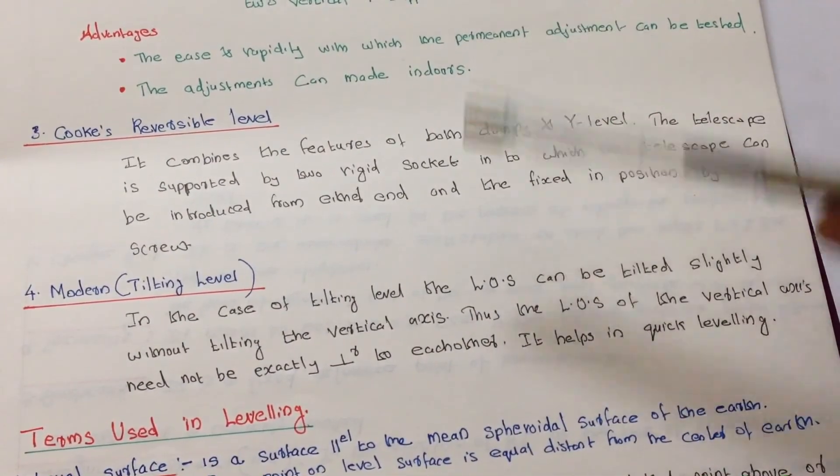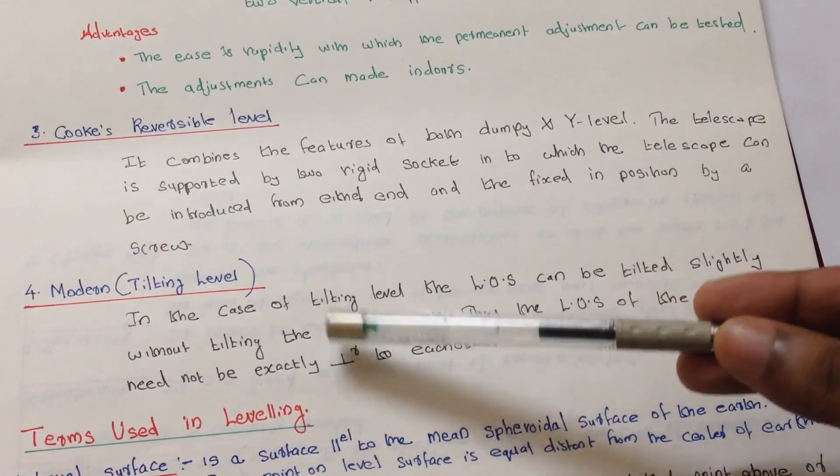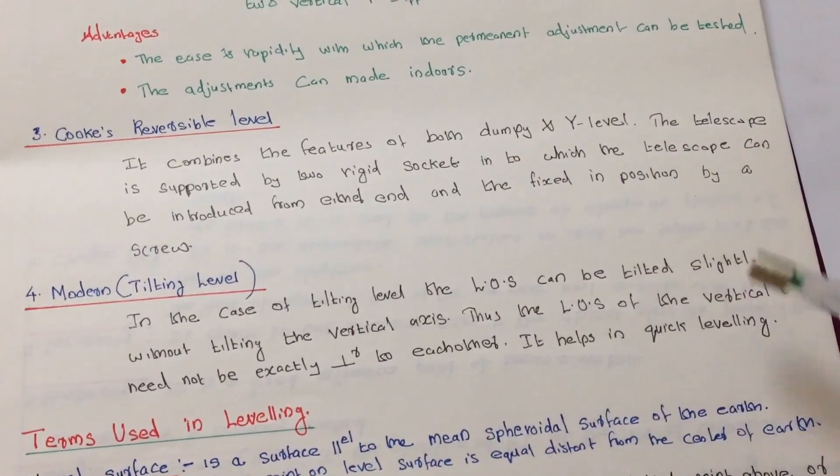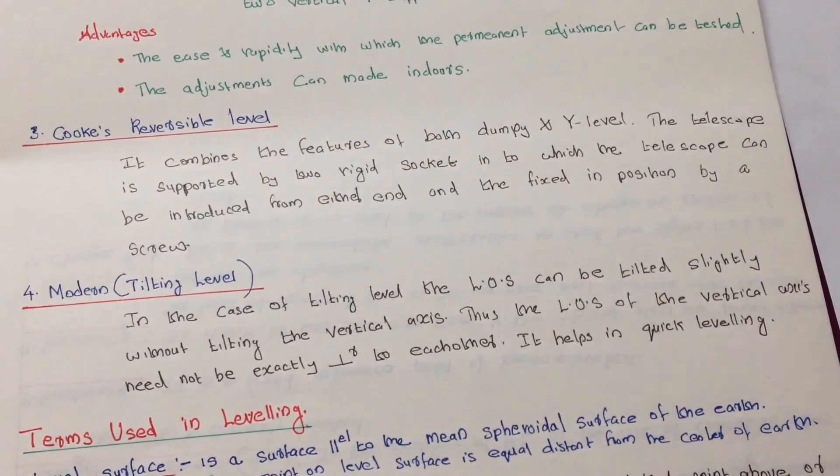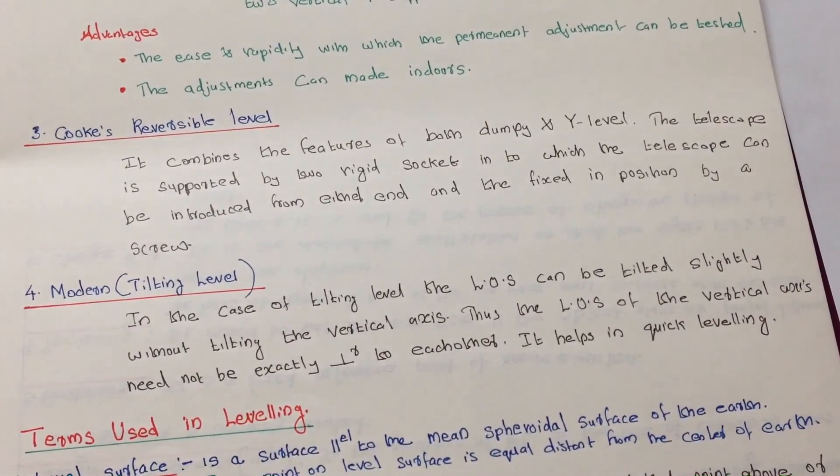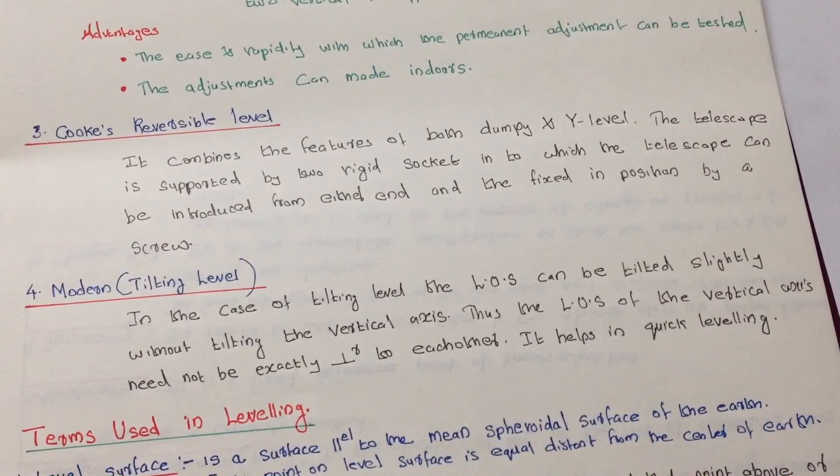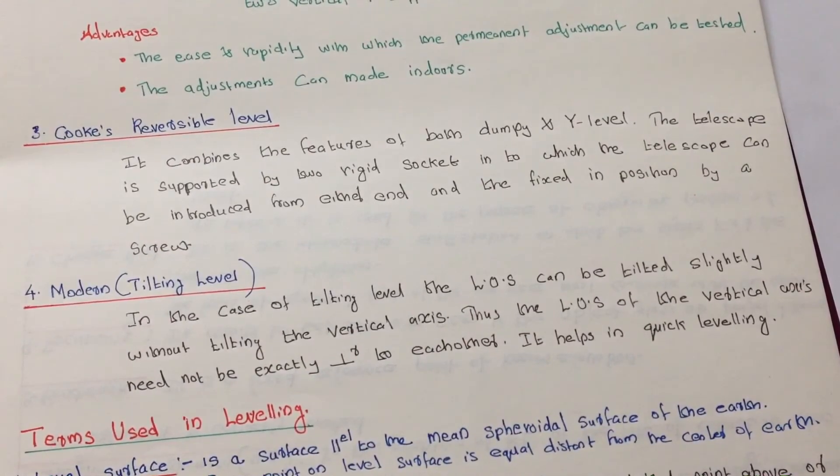Compared to the other three levels, what we can find in the modern or tilting level is that it helps quick leveling. It mainly saves some time. So there are six types of level and these are the four most important levels, types of levels. I hope you all understand the basics of the types of the level. If you like my channel or if you like my video please subscribe my channel. Thank you for watching, bye bye bye.